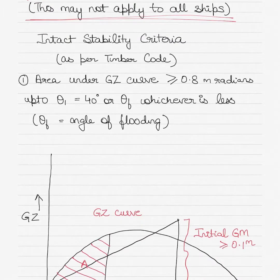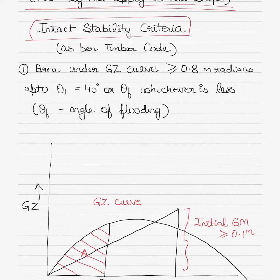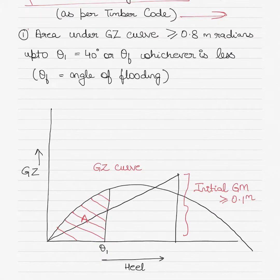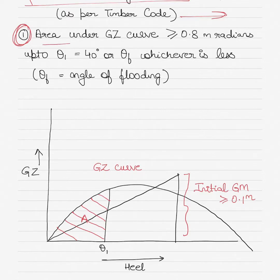Now let's talk about the intact stability criteria of timber-carrying ships as per the timber code. The first criteria — and this is very important and often asked in oral examinations — is shown in the GZ curve plotted against angles of heel. The area under the GZ curve should be greater than or equal to 0.8 meter radians. This area is calculated in meter radians using Simpson's rule.